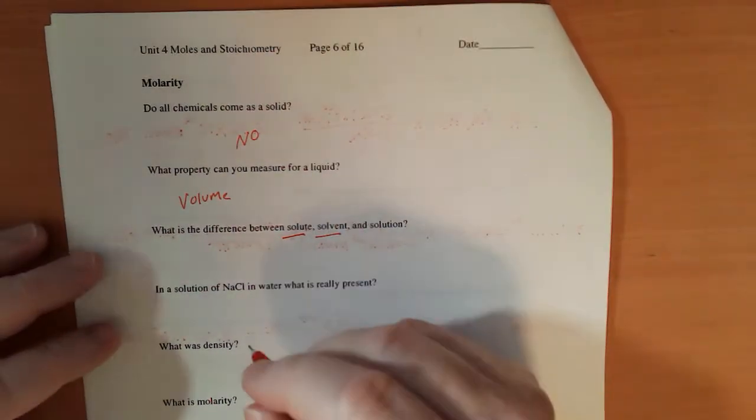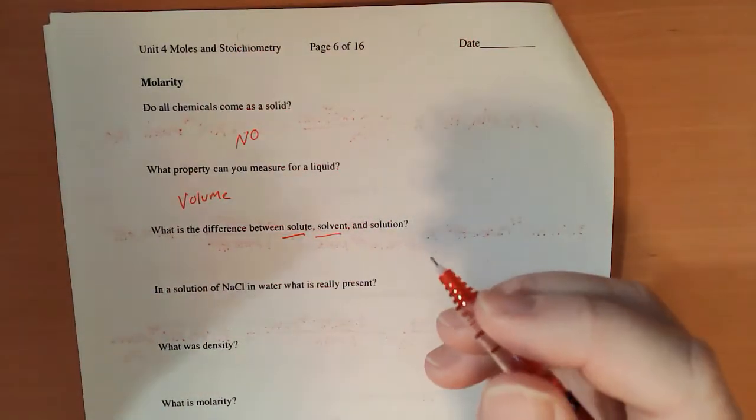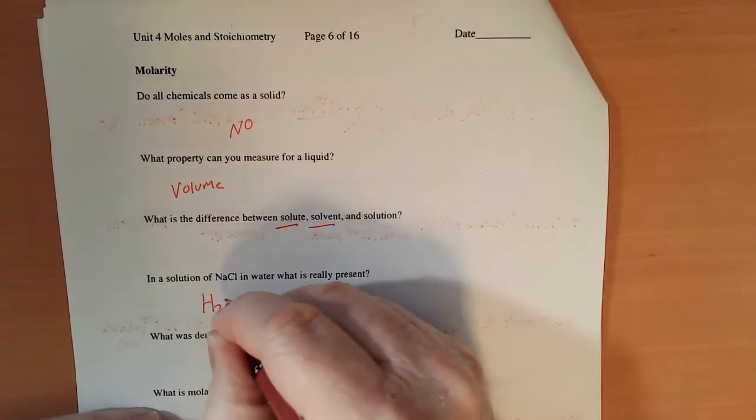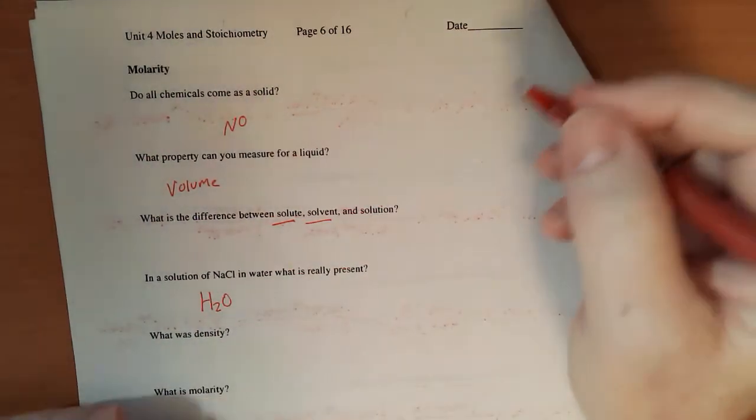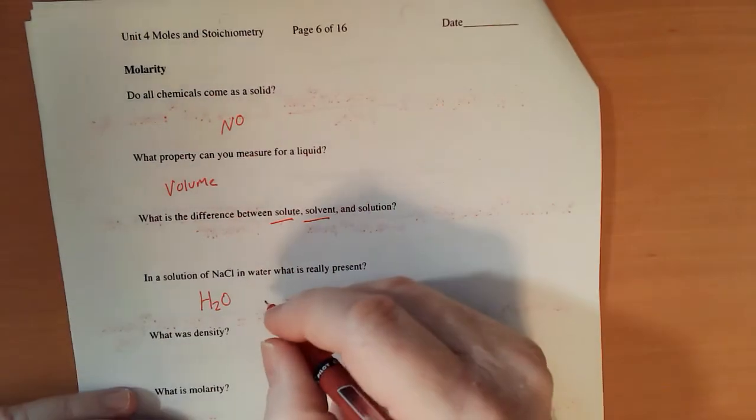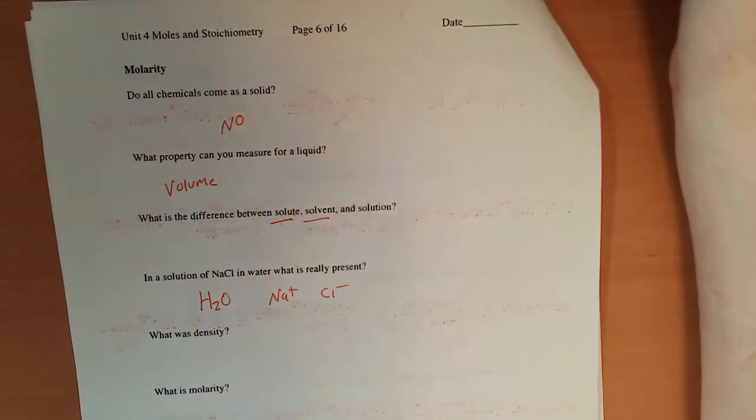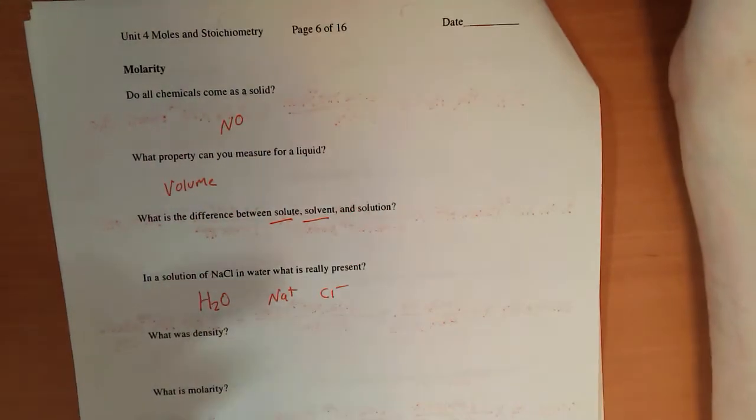So if we have a beaker full of sodium chloride, a solution of sodium chloride, what we have present is water, mostly, and some sodium ions and some chloride ions. So if we were going to try to find its mass, what we'd really be finding is the mass of the water, mostly.